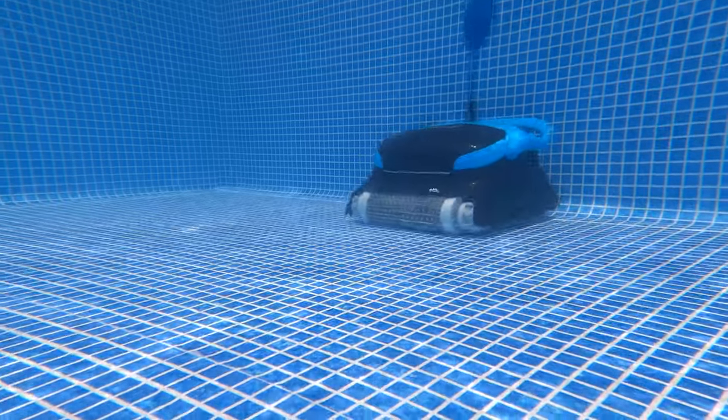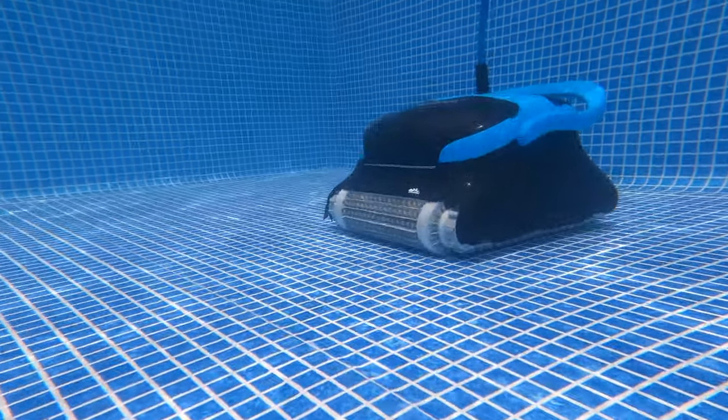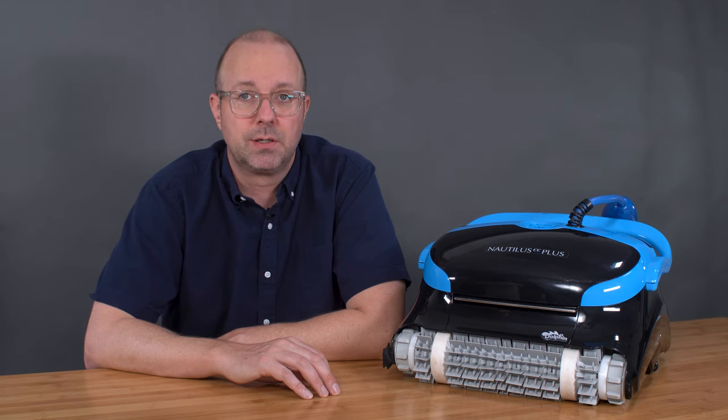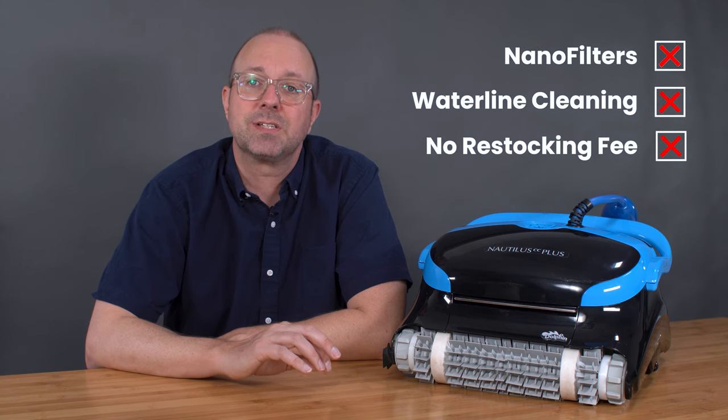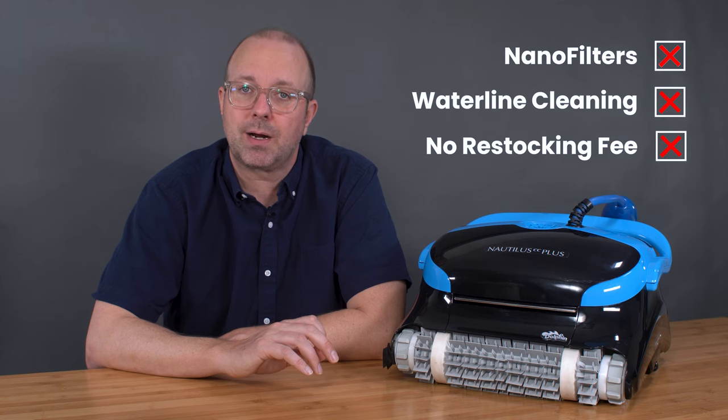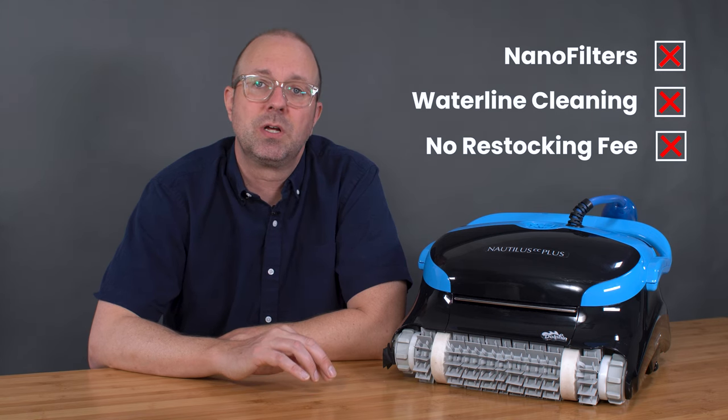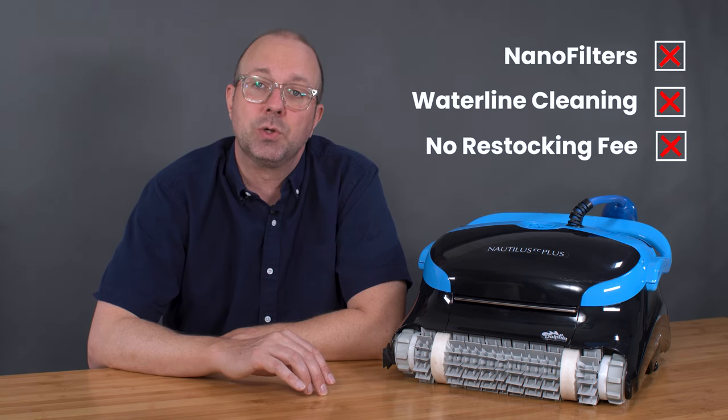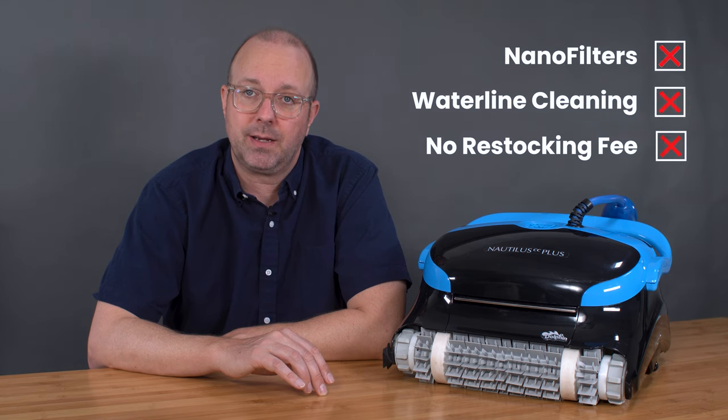Its price and Amazon reviews put it head-to-head with more full-featured robots, but its performance and feature set fall short of competing units. Just looking at this list of essential features, we can see that it falls short of our benchmark, as it lacks nano filters, waterline cleaning, and is usually subject to a restocking fee. So if you're looking into the Nautilus CC Plus, make sure you read the fine print and consider what's missing.